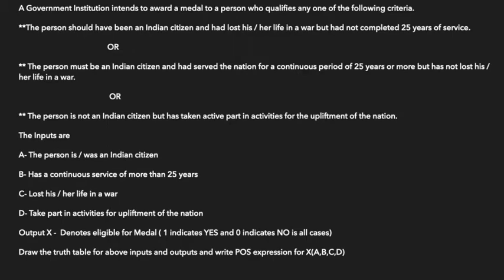The output X denotes eligibility, where one indicates yes and zero indicates no. We need to draw the truth table for input and output and write the POS expression. Remember, we will work with the POS expression using the POS method.